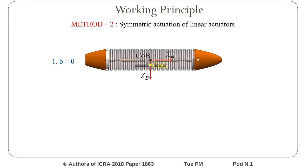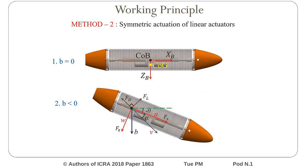Another method of operation is by symmetrically actuating both the linear actuators together. Initially, the system is neutrally buoyant. By compressing both the linear actuators, the system becomes negatively buoyant, resulting in heave motion. Because of the excessive drag due to the wing towards the rear end of the glider, there will be a pitch. This pitch along with the wing will vector the heave motion, resulting in a surge motion.